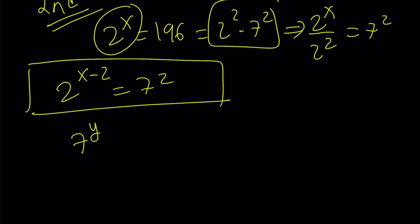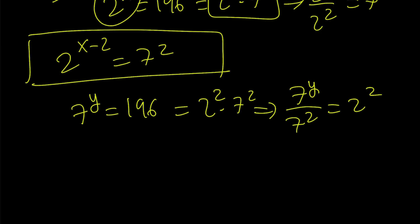And for the other one, 7 to the power of y is 196, which is 2 squared 7 squared. From here, 7 to the y divided by 7 squared is going to be 2 squared. And if you use the power rules or exponents, 7 to the power of y minus 2 is just going to be 2 squared. So I have like two equations that I can use. But the question is, how can I use them, right?